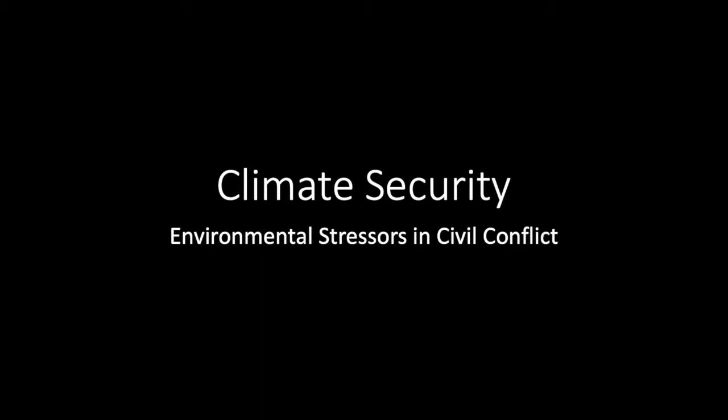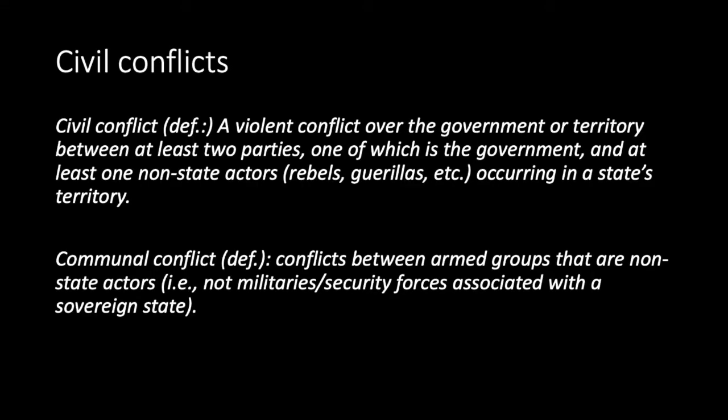In this lecture, we will begin probing the relationship between environmental stress and civil conflict. Civil conflicts are those between states and non-state actors within the state's borders—an example being the conflict between the Houthi-controlled government of Yemen and the forces of the deposed Yemeni government. Another type is communal conflict, between non-state actors that do not directly involve the state. We'll discuss examples of both, as well as the contextual factors—attributes of states or societies—that make them more likely to experience conflict due to environmental stress.